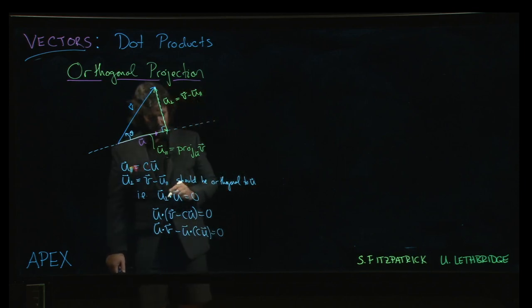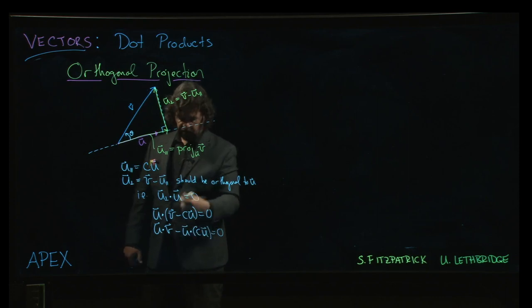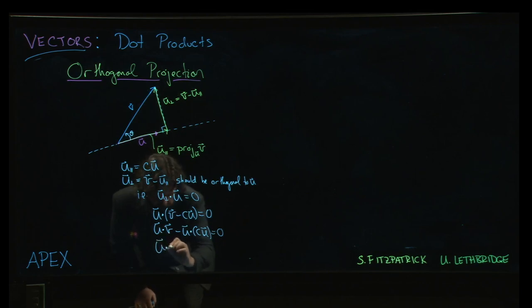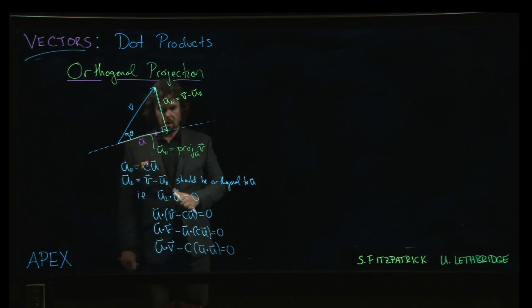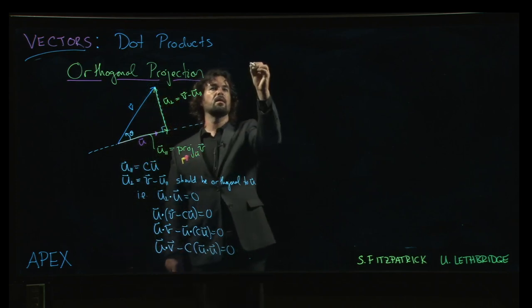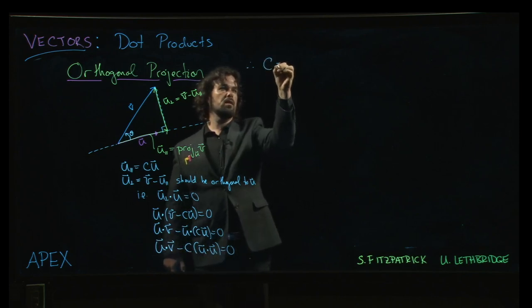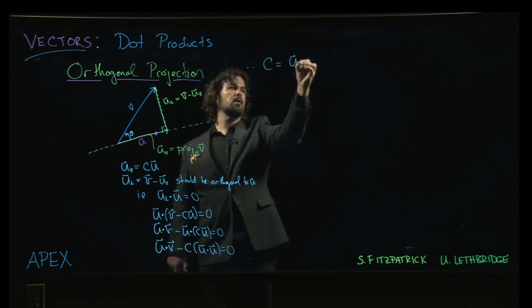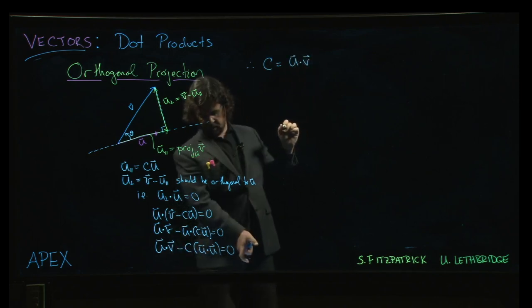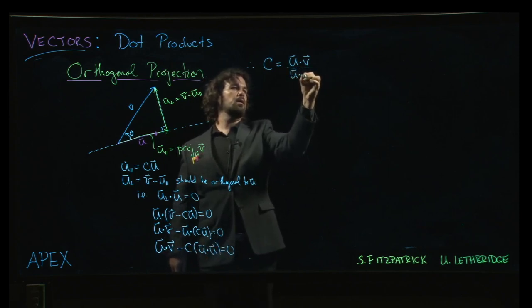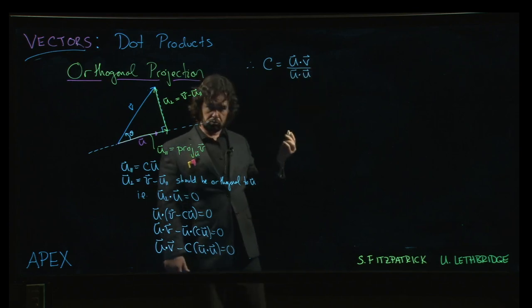But also remember that we can pull scalars out. That's another property of the dot product. So we get that u dot v minus c times u dot u. That should be equal to zero. So that actually gives me the value of c. So c has to be u dot v, move that to the other side of the equation, and we're going to divide by u dot u.